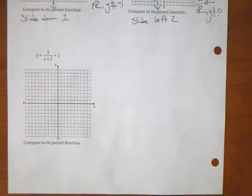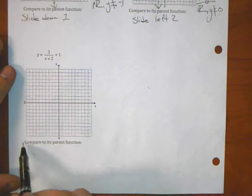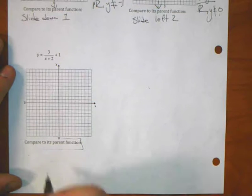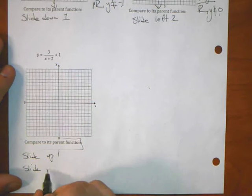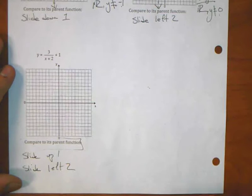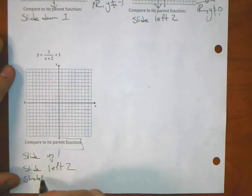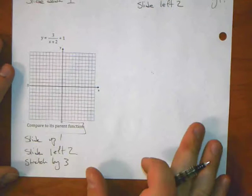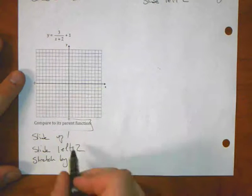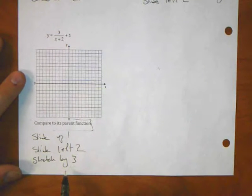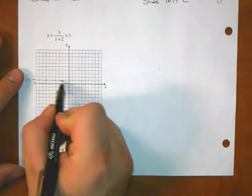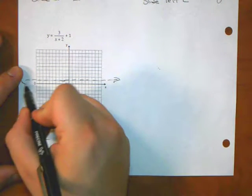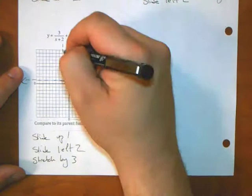I'm going to write the comparisons down, and then you can try to figure out what the graph might look like. What should the comparisons be here? There are three new things here. Slide up one, slide to the left two, and then it's going to be a vertical stretch by three. Is that just me? What did it say at the first slide? Go to the slide up by one, left by two, and it's stretched by three.